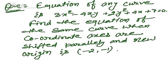The next question: the equation of a curve is 3x² - 4xy + 2y² + 4x + 7 = 0. Find the equation of the same curve when the coordinate axes are shifted parallelly — meaning the new x-axis is parallel to the original x-axis and the new y-axis is parallel to the original y-axis — with the new origin at (-2, -1).